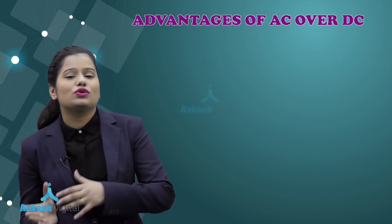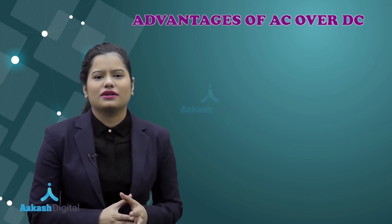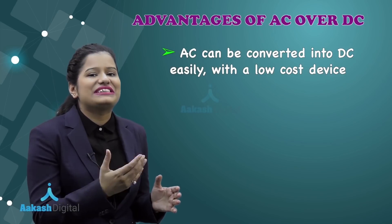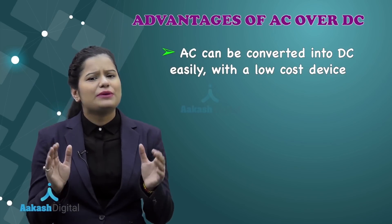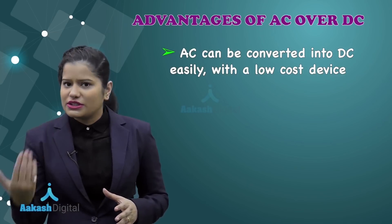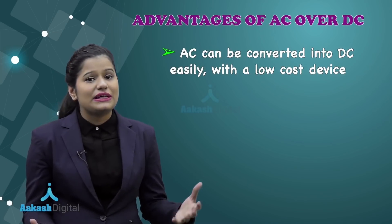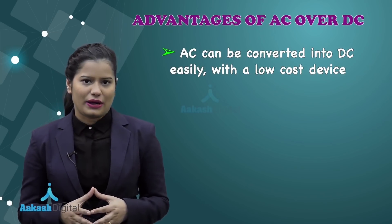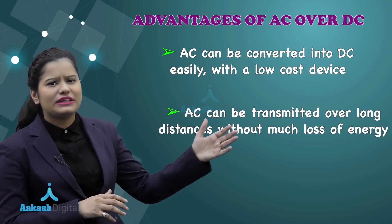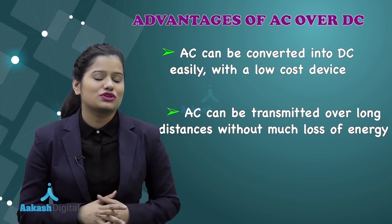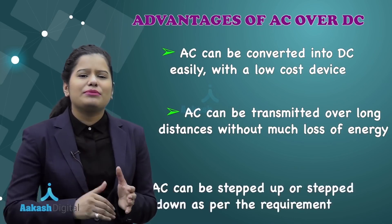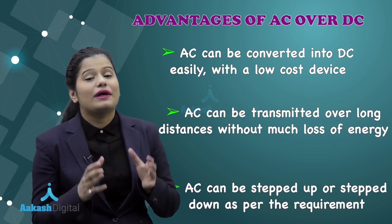We have discussed the advantages of alternating current over direct current. AC can be converted into DC with cheap, low-cost devices, while converting DC into AC requires expensive devices. Also, AC can be transmitted over long distances with very little loss of energy.